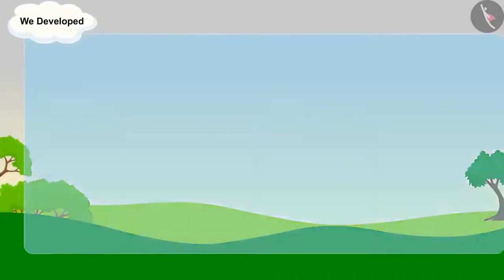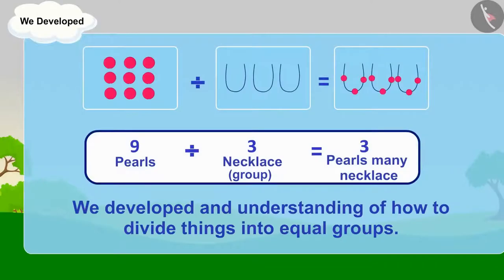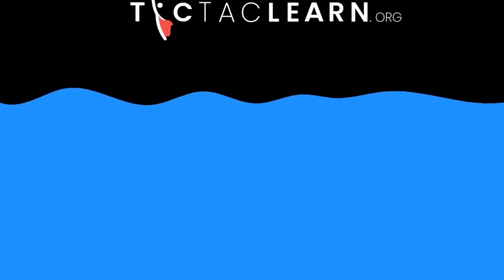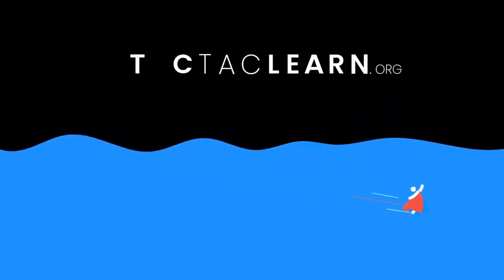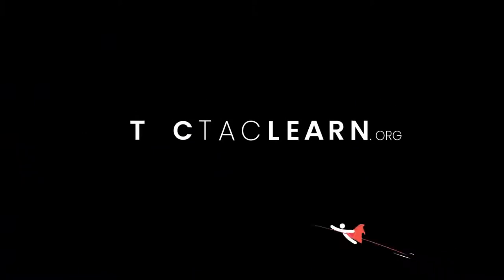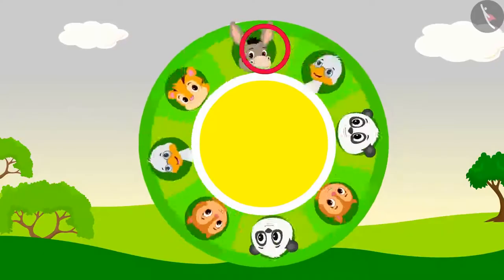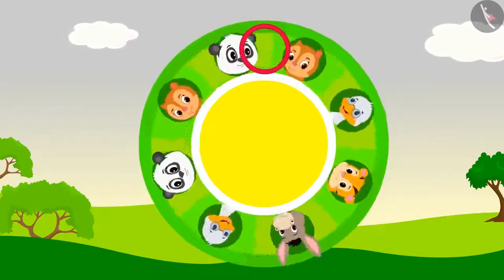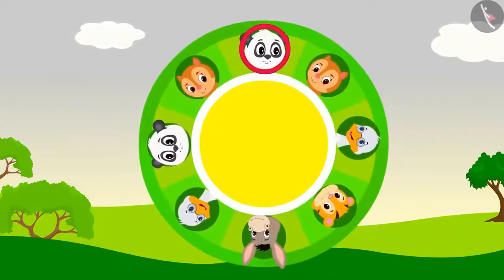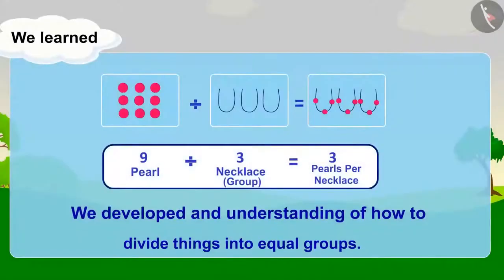In this lesson, we developed an understanding of how to divide things into equal groups. In the previous lesson, we developed an understanding of how to divide things into equal groups. Let us now look at some examples to understand this in more detail.